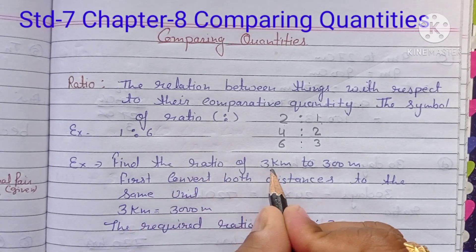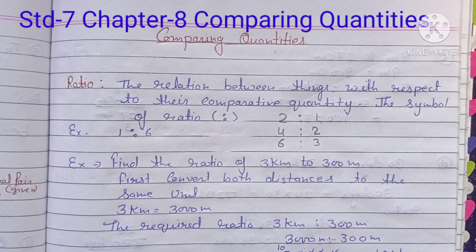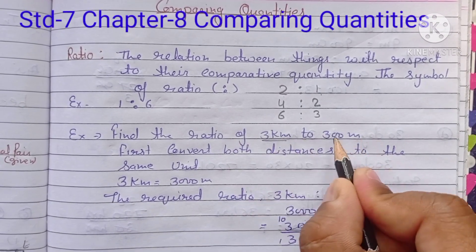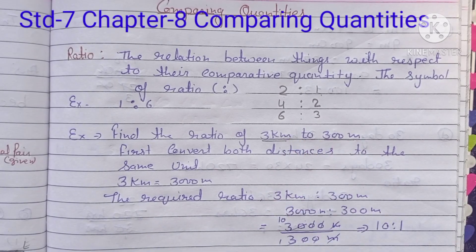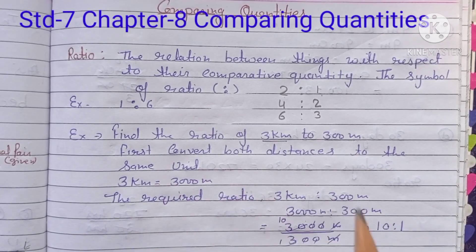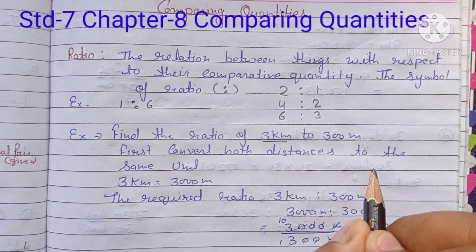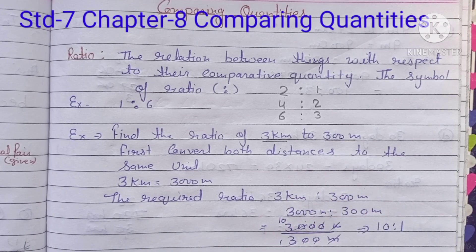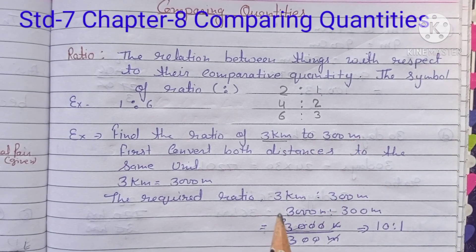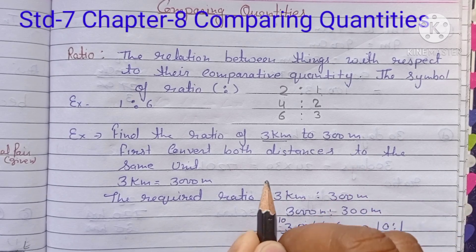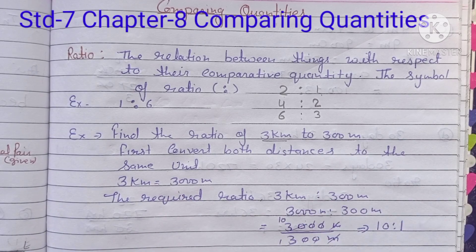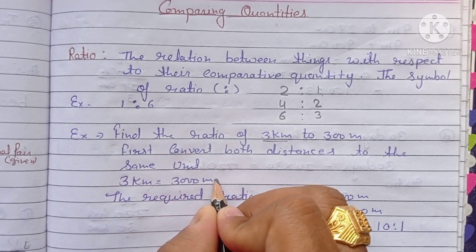Find the ratio of 3 kilometers to 300 meters. Here we compare 3 kilometers — this is a distance. The first condition is that 3 kilometers is equal to 3,000 meters.